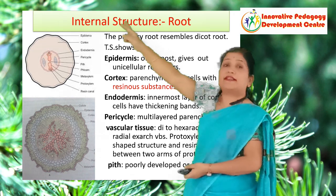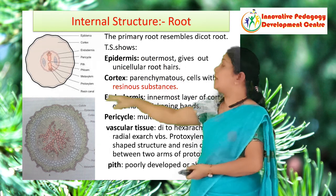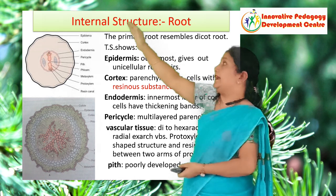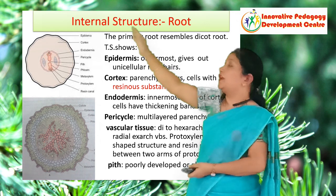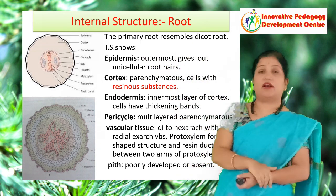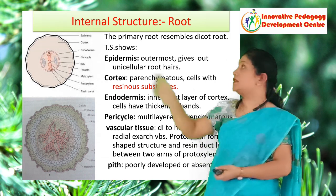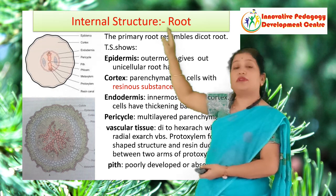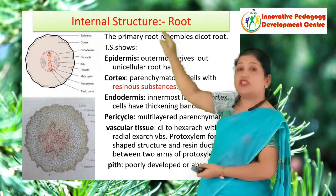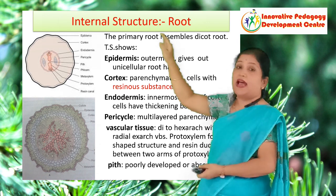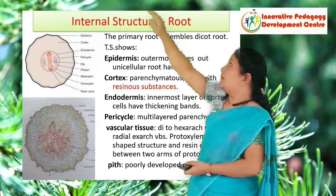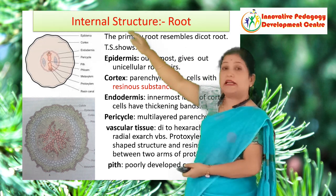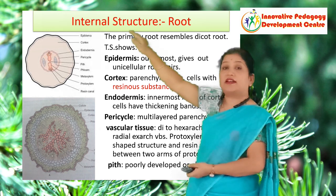Here the upper picture is the diagrammatic view and the lower one is the cellular view. In the diagrammatic view you can only see the different layers. The primary root of Pinus closely resembles a dicot root. The outermost layer is the epidermis, and some cells give out unicellular root hairs. As already mentioned, these root hairs are poorly developed and associated with ectomycorrhizae. This epidermal region is followed by the cortex, made up of parenchymatous cells, and some cells contain resinous substance.